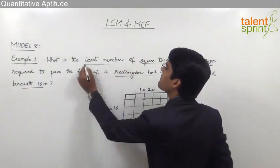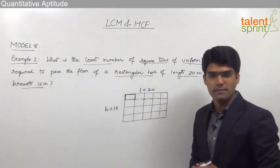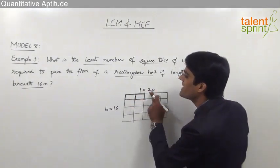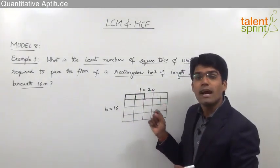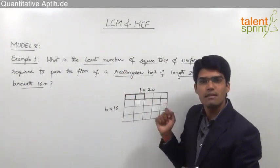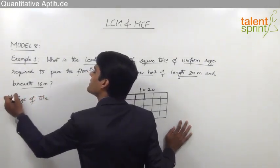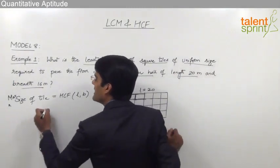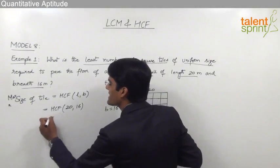As given in the question, the least number of tiles are required. For the number of tiles to be minimum, the size of each tile has to be maximum. So in order to take the maximum size of each square tile, we should take the maximum factor common to both 20 and 16 — that is the highest common factor. The maximum size of the tile will therefore equal the HCF of the length and breadth.